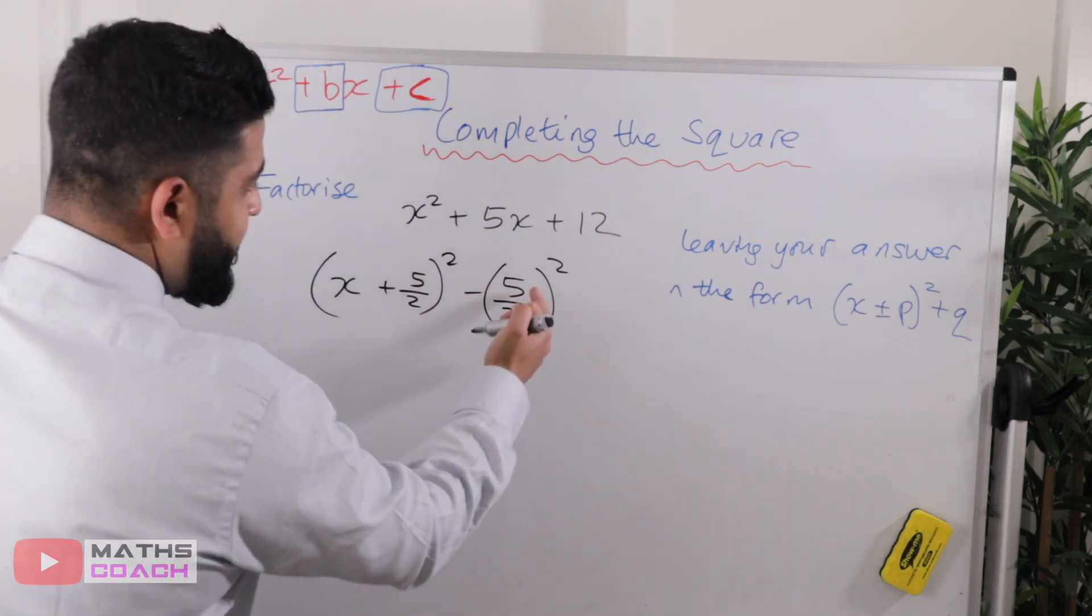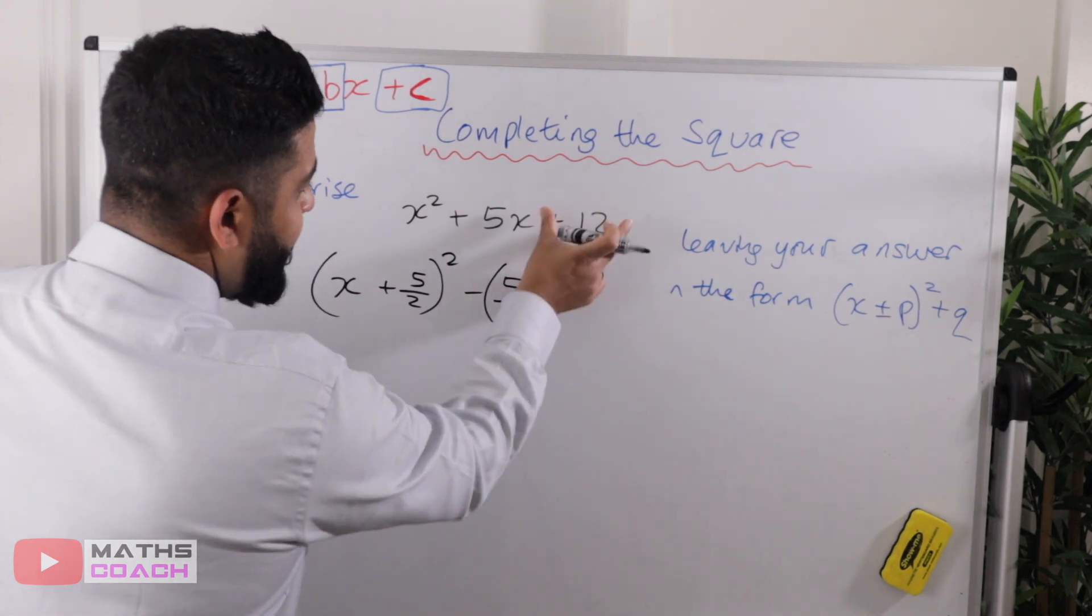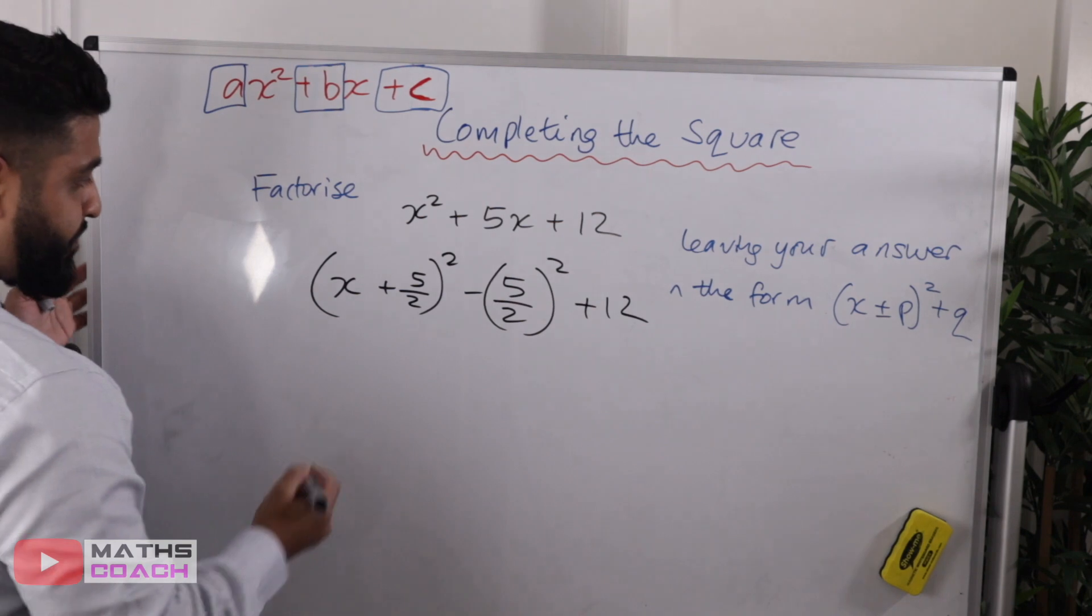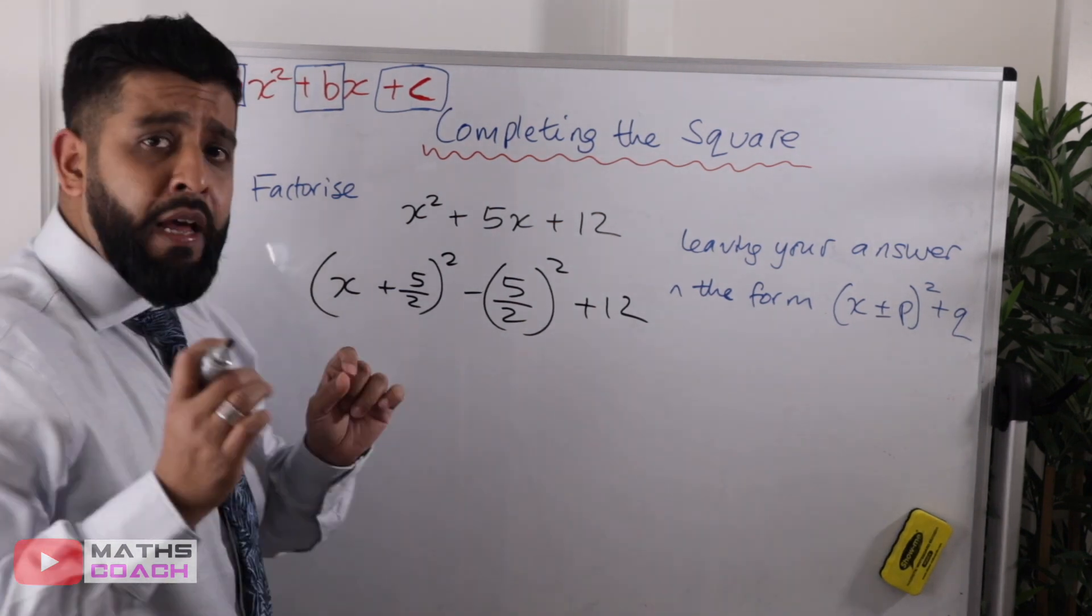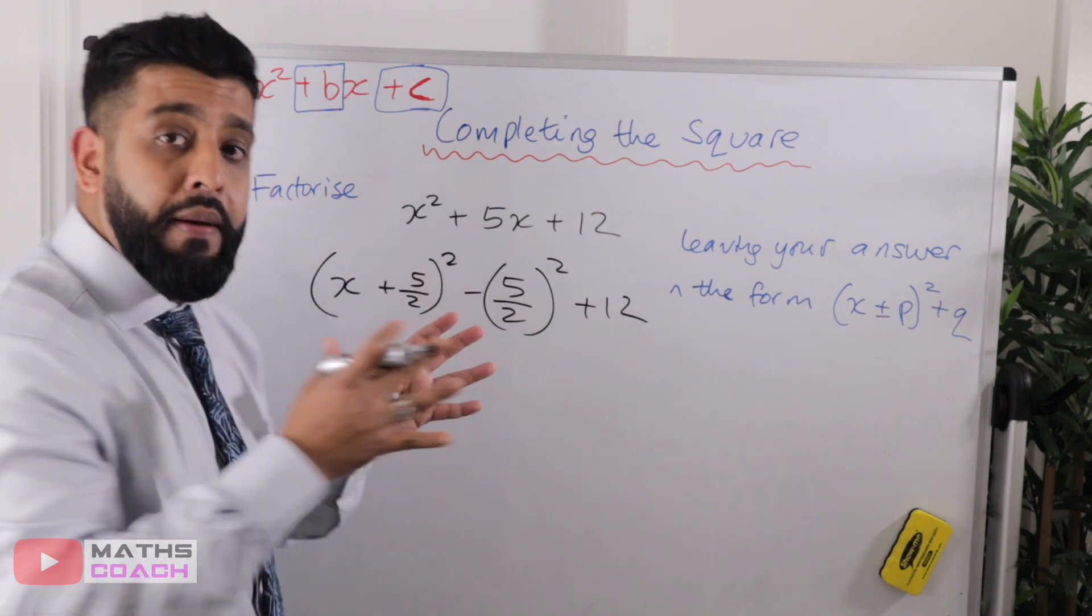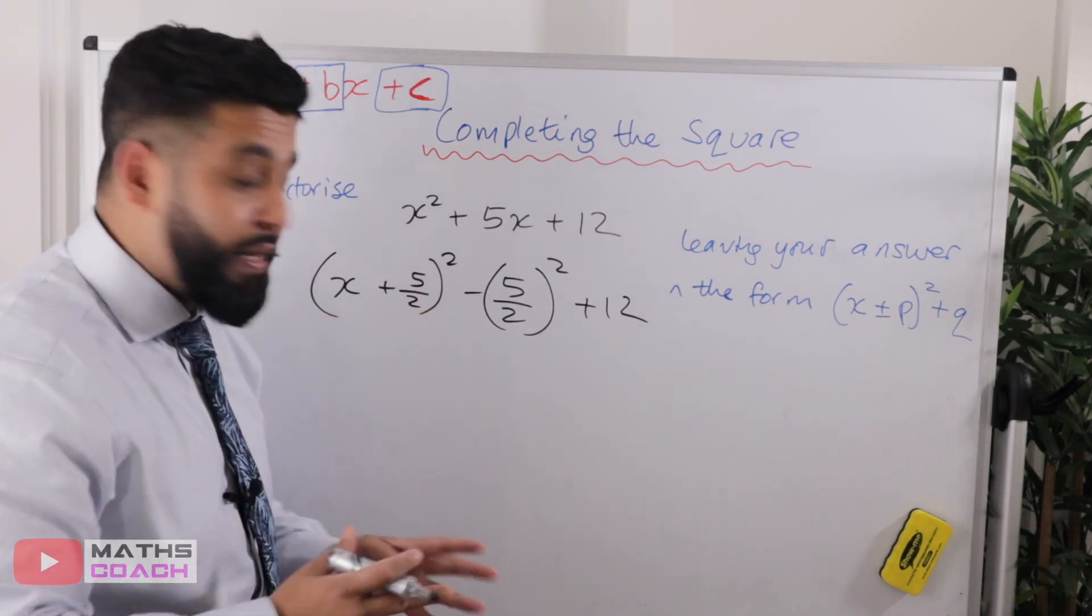And just follow and see whether your final answer matches mine or not. So I've taken away the (5/2)², and the plus twelve is hanging around there anyway. So I'll leave that like that. Now remember, I did say to you at the beginning of the lesson that completing the square usually appears on a non-calculator paper.